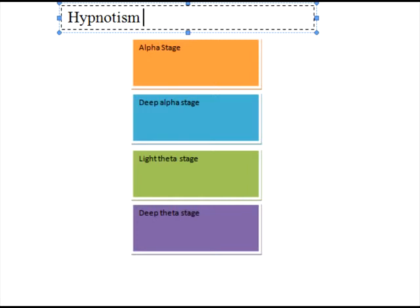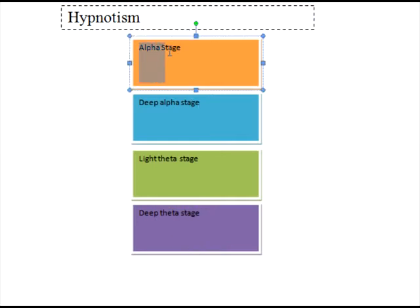A lot of people are stuck in fixed patterns and we need to break and improve those patterns. Now, in hypnotism, whenever you're trying to do a self-hypnosis, what you need is a very quiet room. You should be sitting in a very relaxed manner — just leave yourself, be relaxed. The first thing is to start taking breaths. Take in the breath slowly, hold it for some time, and then exhale.